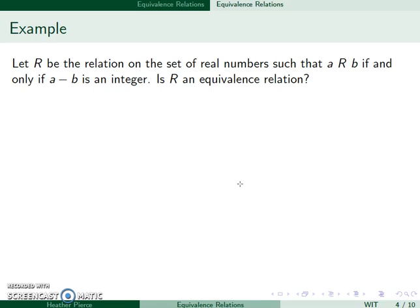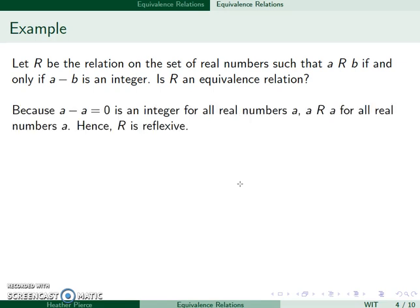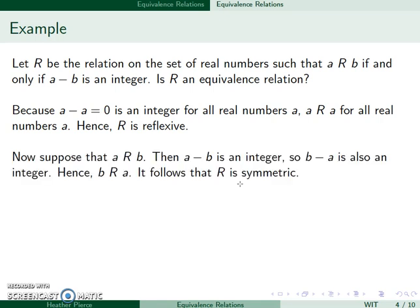Let's look at another example where A is related to B if A minus B is an integer. A minus A equals zero, which is an integer, so the relation is reflexive. If A minus B is an integer, then so is B minus A, since the only difference is a negative sign. So B is also related to A, meaning the relation is symmetric.